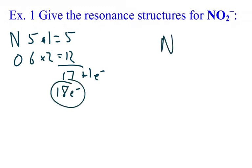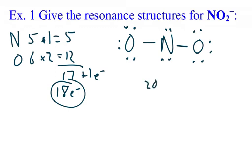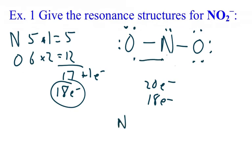We're going to put nitrogen here, put the two oxygens, connect them, and give everybody an octet like we normally do — starting with the peripheral atoms first, then the nitrogen. When you count the lines and the dots, you're going to see that you have 20. We're going to have to remove two electrons and bring it down to 18. You can see where the resonance comes in because we can remove one from here and one from here, and when we do that, our double bond will be between these two. So our first structure would have a double bond on the left.